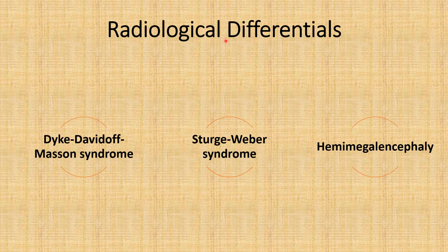A few differential diagnoses, especially radiological ones, are Dyke-Davidoff-Masson syndrome, Sturge-Weber syndrome, and hemimegalencephaly. Clinically it may be confused with some neurodegenerative disorders — though neurodegenerative disorders will have generalized findings — and sometimes with autoimmune encephalitis or inborn errors of metabolism. Now I will briefly discuss the radiological differential diagnoses.